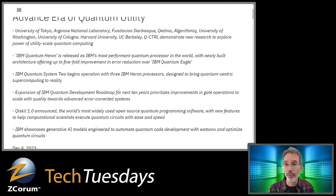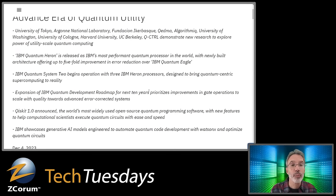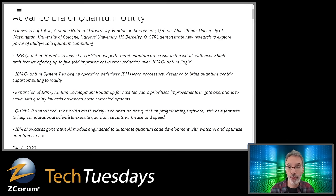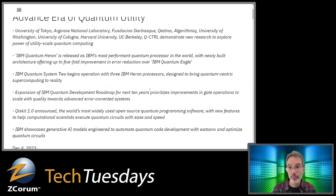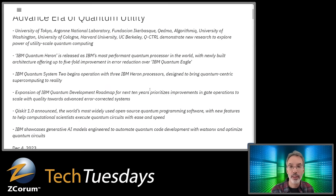IBM Quantum System 2 is their new modular computer system using Heron processors, designed to bring quantum-centric supercomputing to reality. In addition to Heron, they introduced another chip called Condor. Heron has up to 133 qubits, while Condor scales up to a thousand — proving they can scale it. But their focus now is on Heron: fewer qubits, lower error rate, making it more of a practical reality. With Condor they proved they can scale it higher; with Heron they're proving they can make it more reliable.